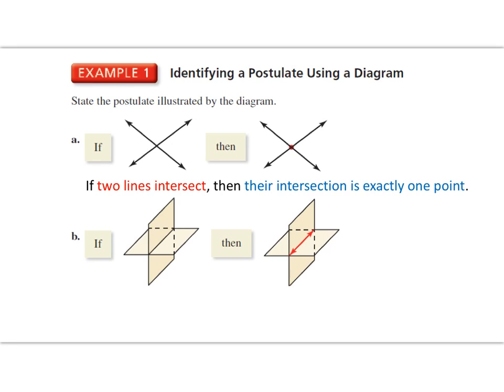Look at example B. If I see two planes intersecting, so that's what I say in words, then their intersection is a line.